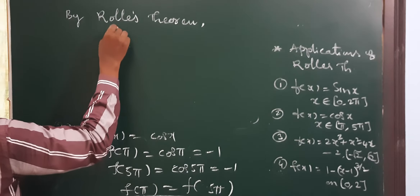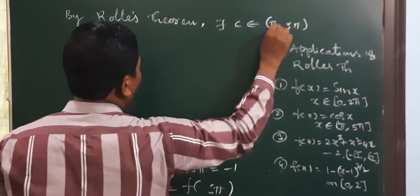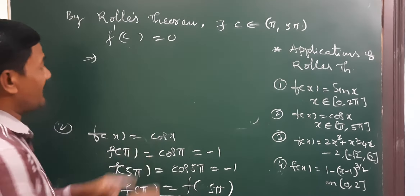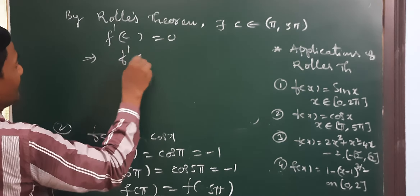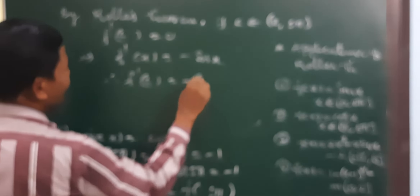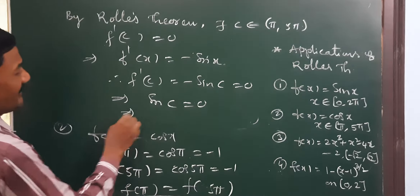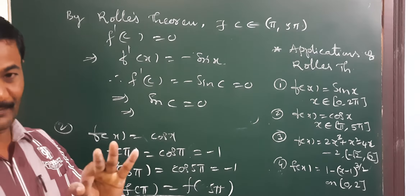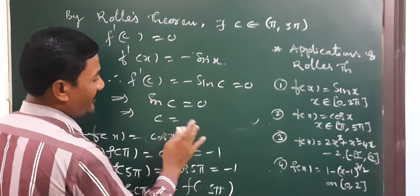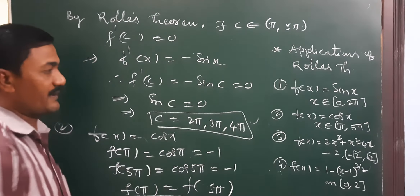By Rolle's Theorem, there exists c in open interval (π, 2π) such that f'(c) = 0. Now f(x) = cos x, so f'(x) = −sin x. Therefore f'(c) = −sin c = 0, which implies sin c = 0. The values where sin c = 0 are c = π, 2π, 3π, 4π, etc. Since 0 is not in the interval, c = π is the value we are finding. So c = π belongs to the open interval. This is the second application.